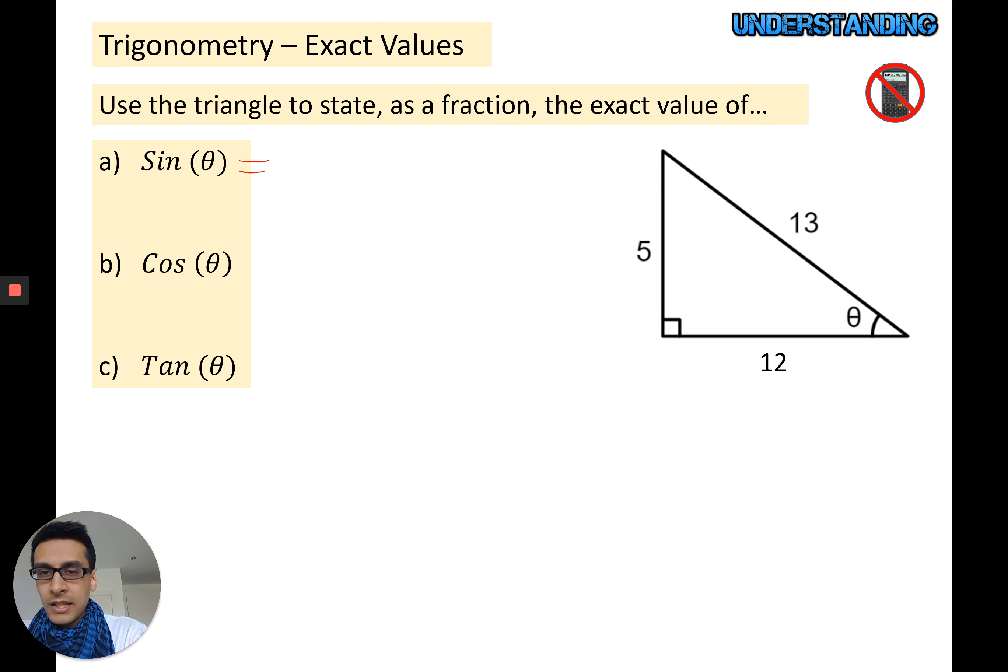Just in terms of working out exact trig values using the triangle, state as a fraction the exact value of sine theta. Well, you know that sine theta in this triangle here, that's your theta there, is going to be opposite over hypotenuse. So your opposite side is 5 and your hypotenuse is 13. Your hypotenuse always has to be opposite the right angle and it's always the longest side. Cos theta is adjacent over hypotenuse.